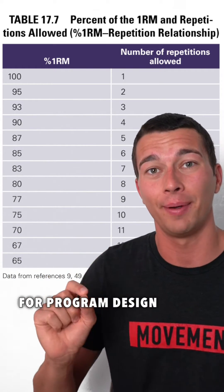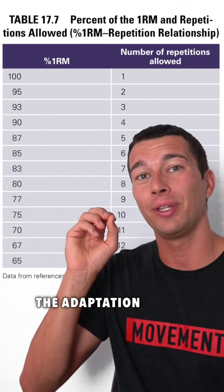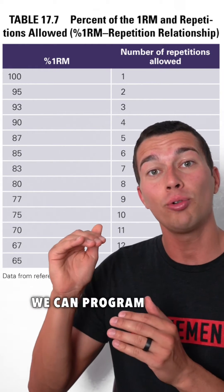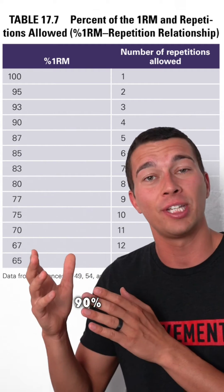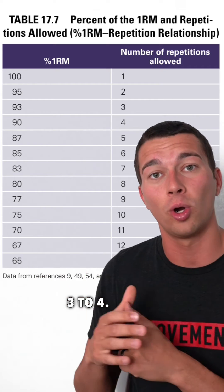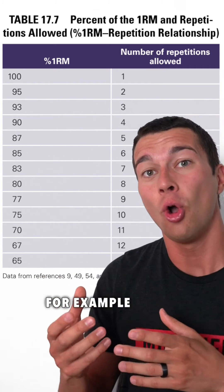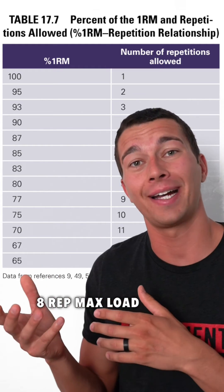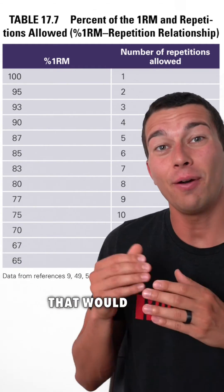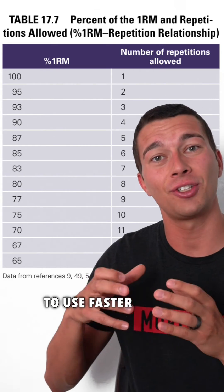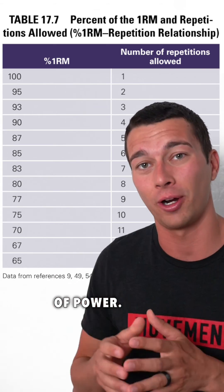This is really helpful for program design because if we're focusing on, for example, the adaptation of strength, we can program pretty close to that rep max — for example, 90 percent for a few sets of three to four. But if we're programming for power, we can use closer to an eight rep max load or 80 percent one rep max for four sets of four. That allows the athlete to use faster bar speed and make those reps more specific to the adaptation of power.